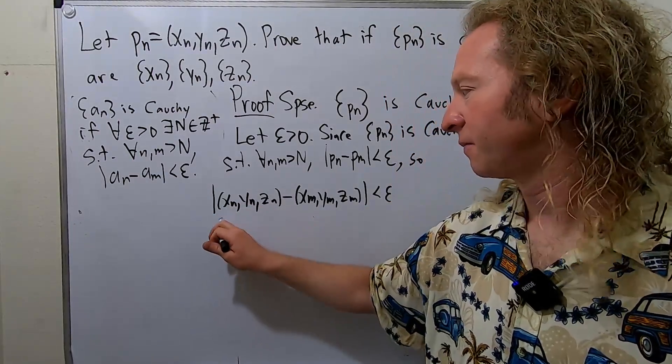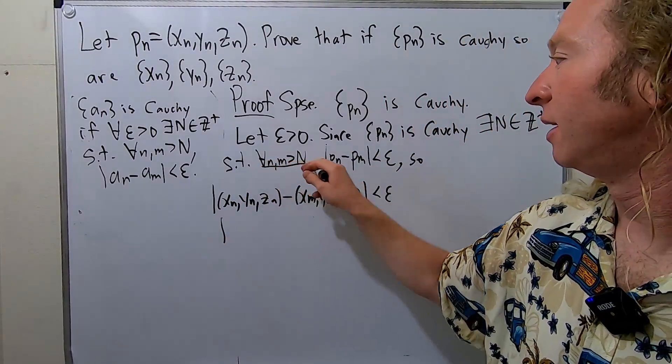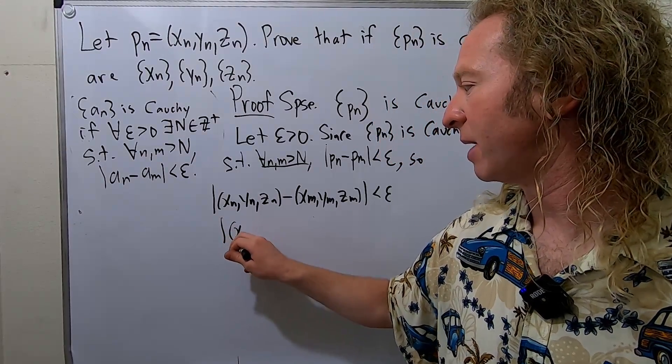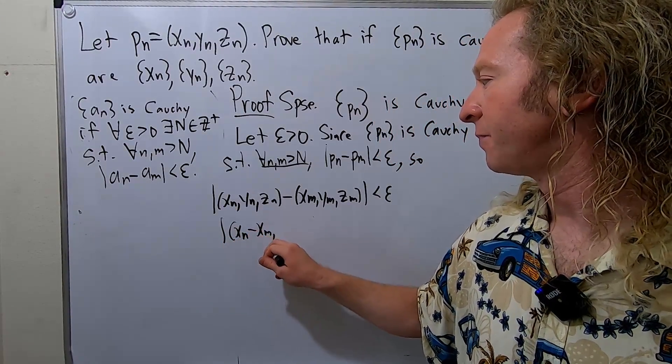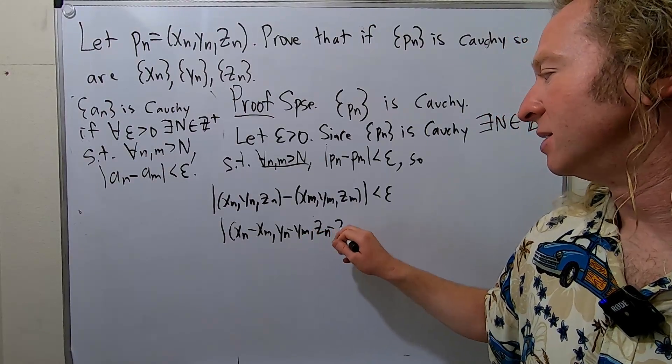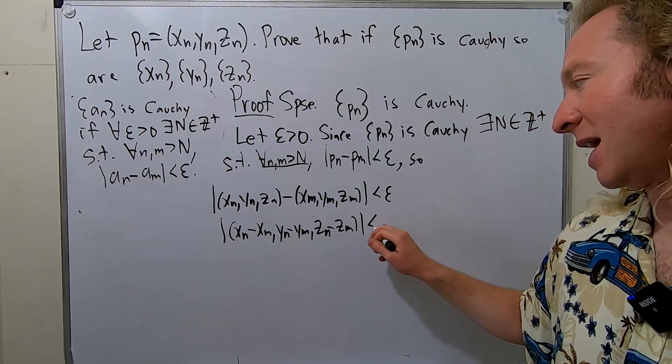We can now subtract the components. And this is true for all little n and little m bigger than capital N. This will be X sub n minus X sub m, Y sub n minus Y sub m, Z sub n minus Z sub m. And that's less than epsilon.